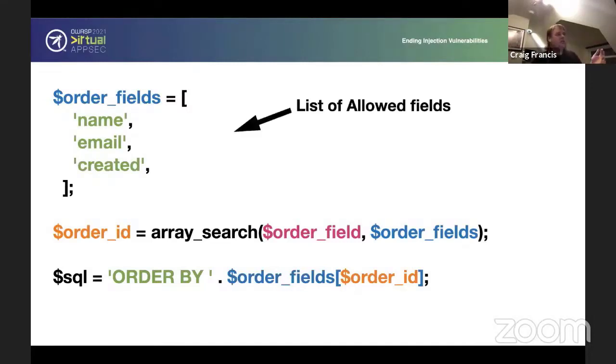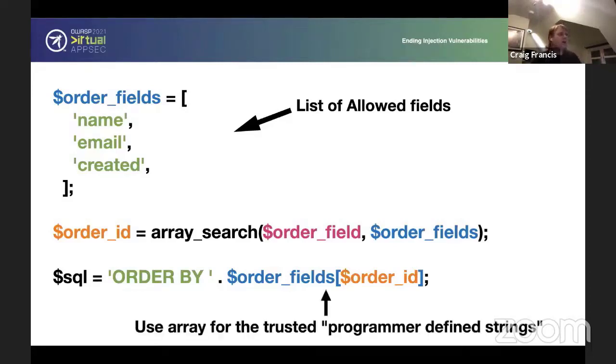So, one way around this, or one way you should be dealing with it, is you have your allow list. So, you have an array of allowed fields that you can order by. And by using this array-like structure, you can, first of all, you can search through it. So, the order field variable there is saying what the user would like to sort it by. You search through that array to see if you can find it. If you find it, then you bring back the index for it, which is where you get the order ID variable. So, if it's ordered by the email field, then that would be one because we're zero-based indexing. And then when you come to do the actual order by, you reuse that array of programmer-defined strings to pull out the one that you want. And therefore, you now have a nice plain thing, which ensures that you are only allowing the ordering by certain things. And that's the way you do that.